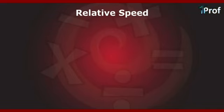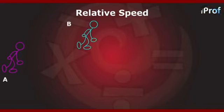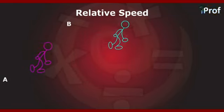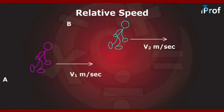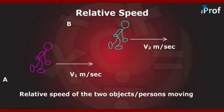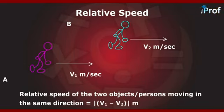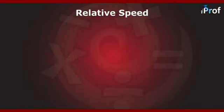Suppose there are two persons A and B moving in the same direction with speeds v1 and v2 meters per second respectively. Then the relative speed of the two persons moving in the same direction is equal to |v1 − v2| meters per second.